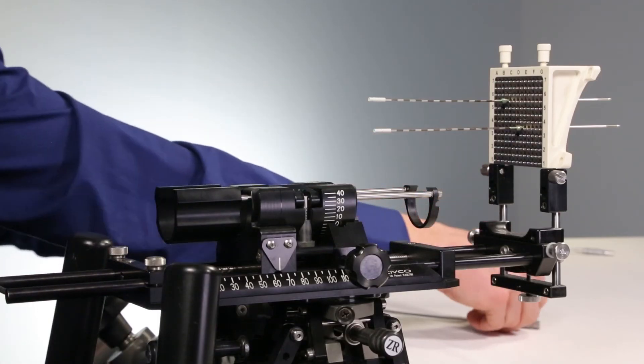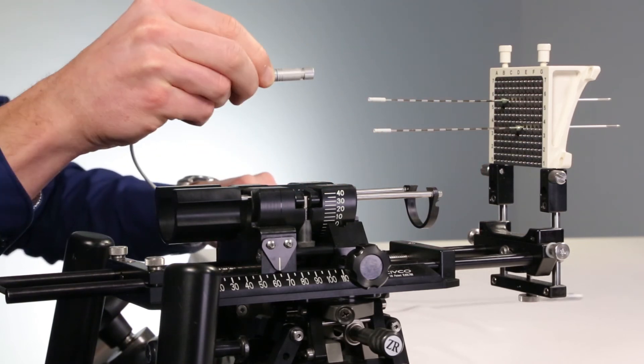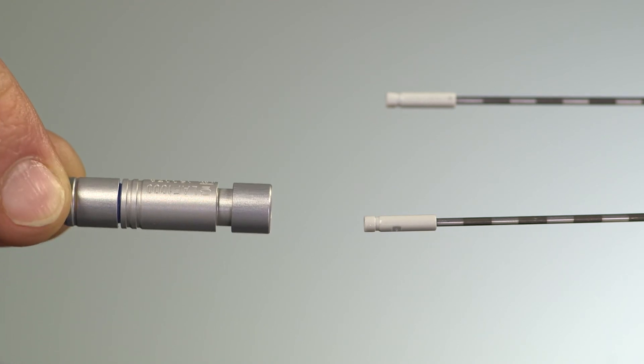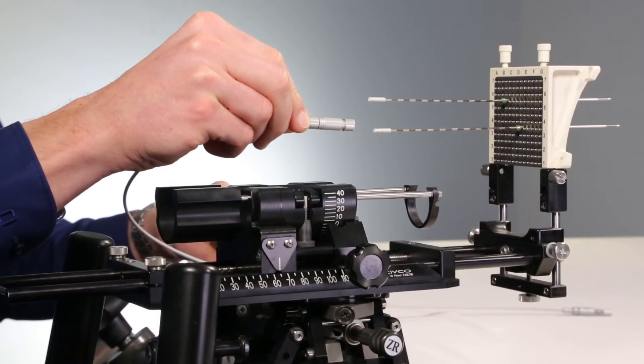In the last stage, we connect the applicator needles with the afterloader system using transfer tubes. Here we use transfer tubes that are compatible with Eckert & Ziegler-Bebig afterloader systems.